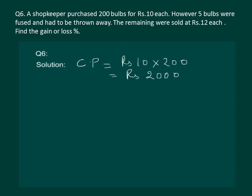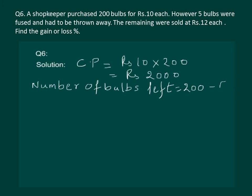Five bulbs were fused and had to be thrown away, so the number of bulbs left to sell is 200 minus 5, which is 195 bulbs. The remaining were sold at rupees 12 each — so the selling price of 195 bulbs is 12 multiplied by 195, which comes out to be rupees 2340.